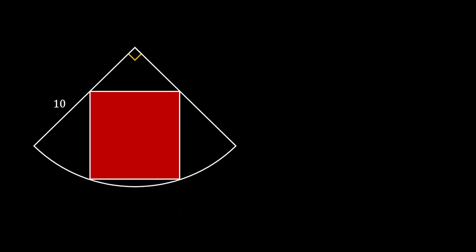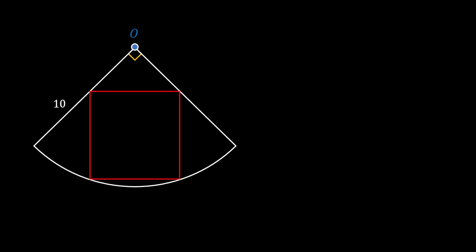Here we will start by marking some points. First we will mark the center of our quarter circle as O. Then we can mark all vertices of our square as A, B, C, and D. You can notice that the line AB of our square also represents the chord of our quarter circle, so we can use the perpendicular bisector.